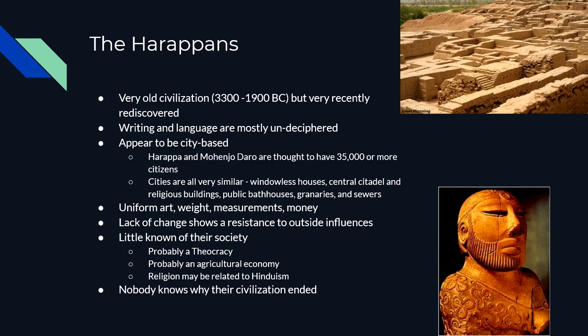We know that they traded with their neighbors — we have found evidence of their trade as far as China and Southeast Asia, like modern-day Vietnam. The stuff they traded included ivory, gems, bronze, and precious metals. Nobody knows what happened to them. We think it was probably related to environmental change: deforestation led to soil erosion, desertification, and drying out of the land, resulting in a decline in agricultural production. Their cities start to decline around 1900 BC, and all evidence of them has gone by about 1500 BC or so.